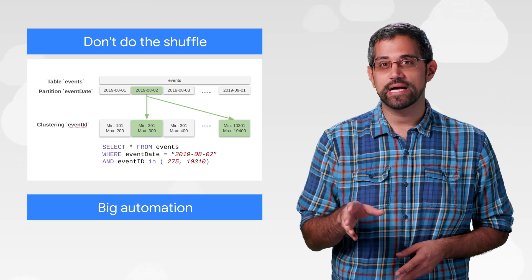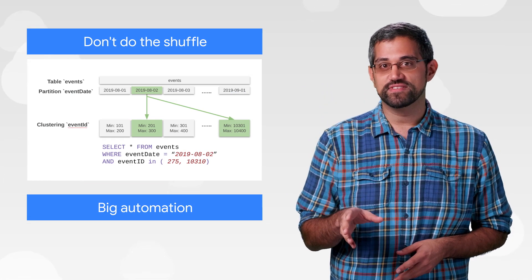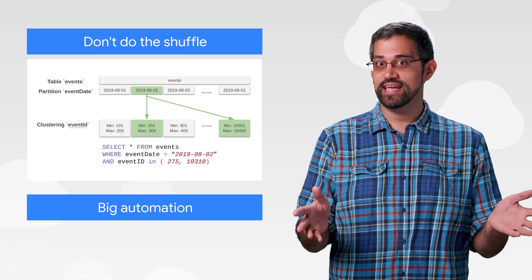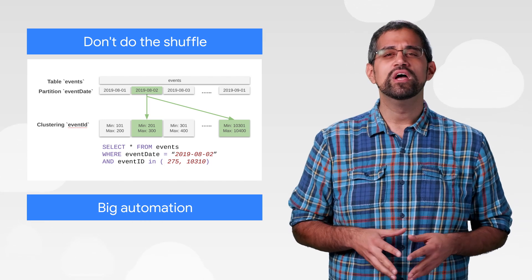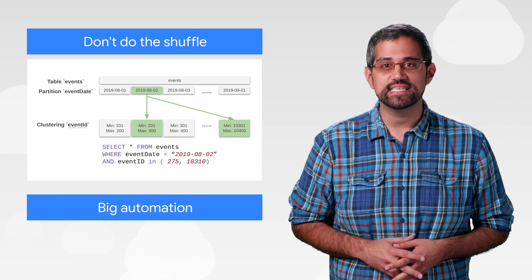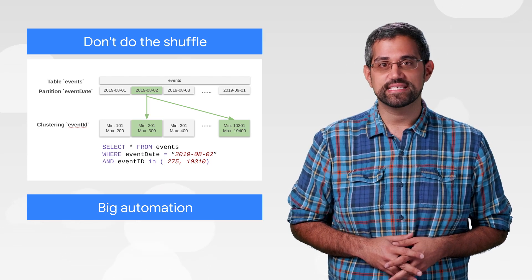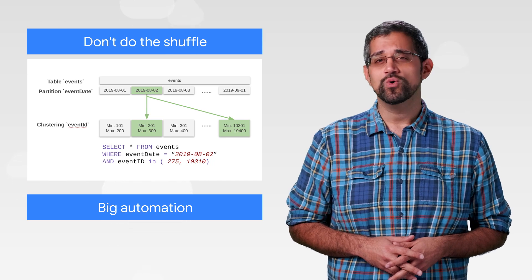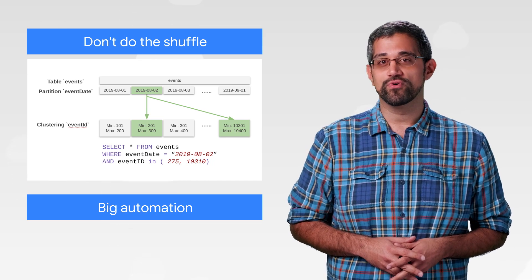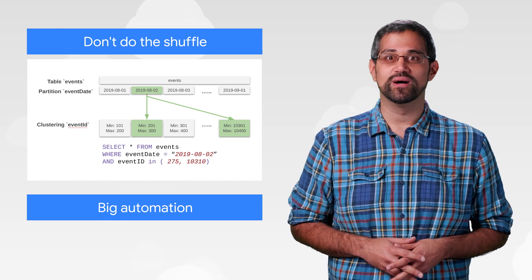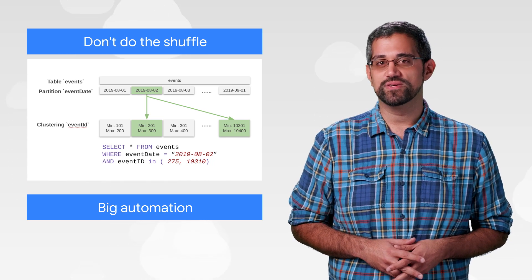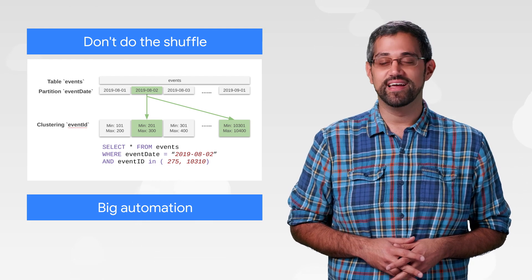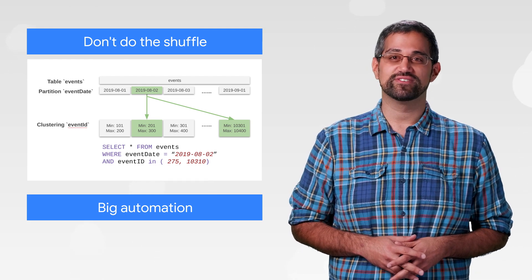BigQuery lets you analyze tremendous amounts of data quickly, thanks to some great tech, including partitioning and clustering. You can customize these in your BigQuery data sets based on your typical usage to reduce data shuffling, which will also help you improve performance and lower cost. Check out this blog post that explains more about how clustering works, and then try it out for yourself.